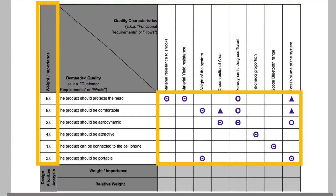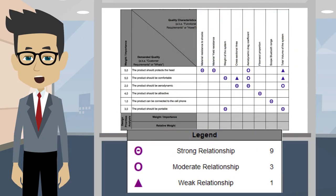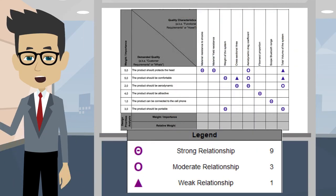It allows a more profitable use of our resources. But how can we estimate the importance of all the technical variables? Let's do it step by step. Do you remember that the relationship between how's and what's were graded with symbols that represented a scale of three numbers?